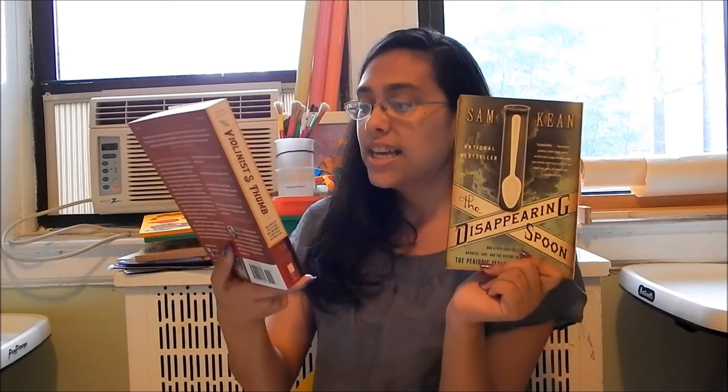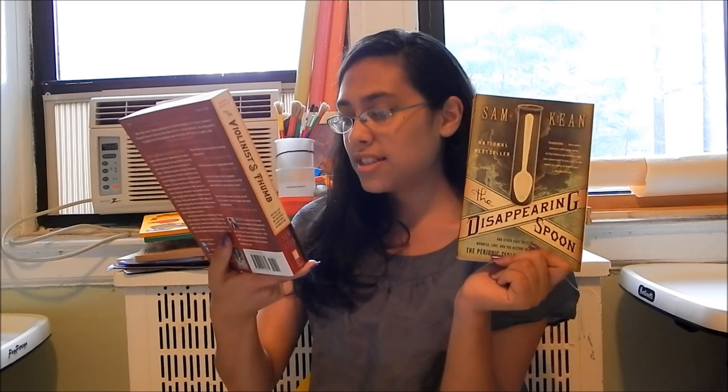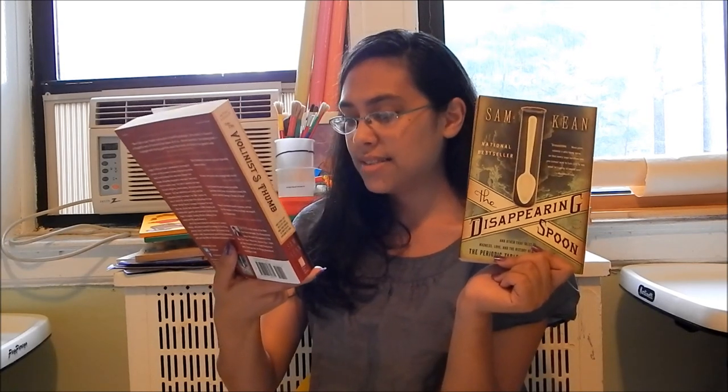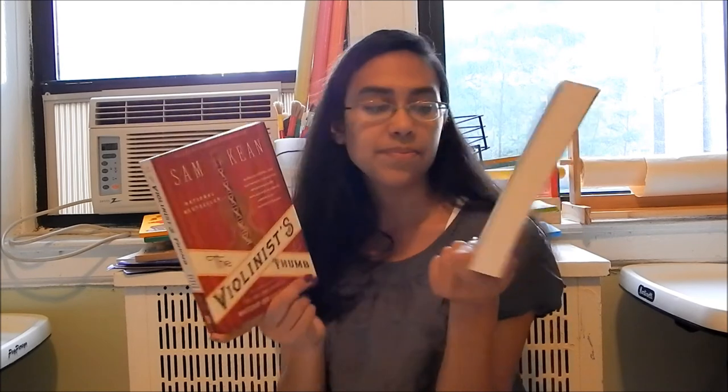The full titles are The Violinist Thumb and Other Lost Tales of Love, War, and Genius, as Written by Our Genetic Code, and The Disappearing Spoon, and Other True Tales of Madness, Love, and the History of the World from the Periodic Table of Elements. I really like the covers, actually. I like that they match. I get really excited when books come to match.